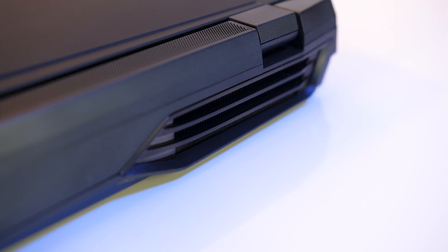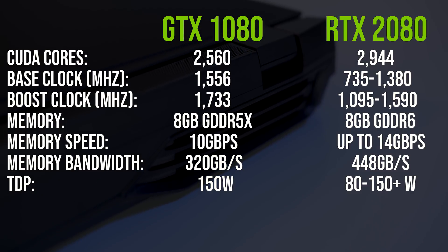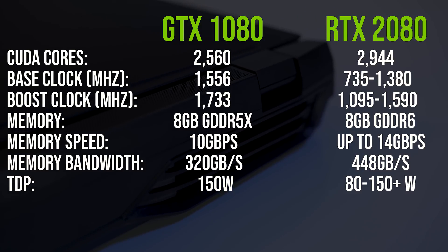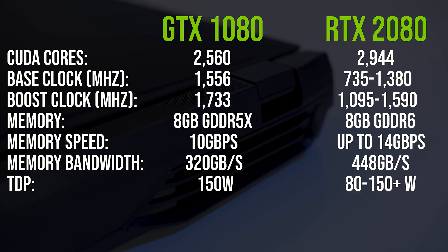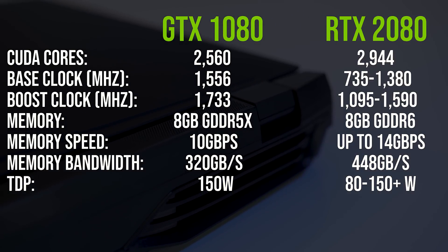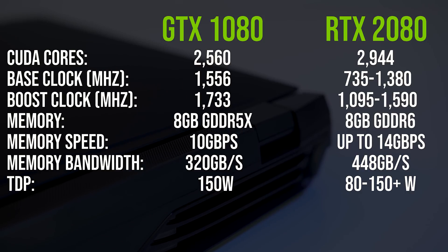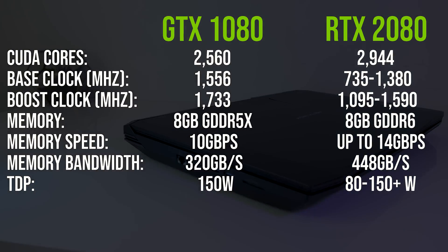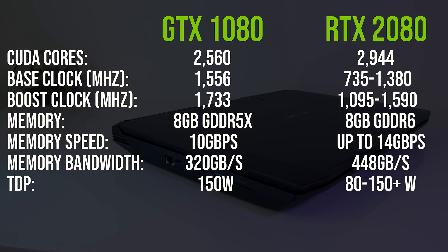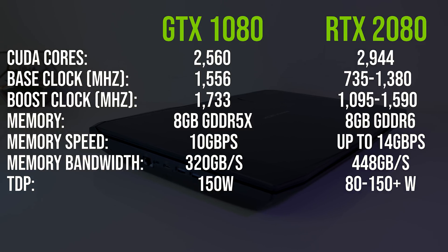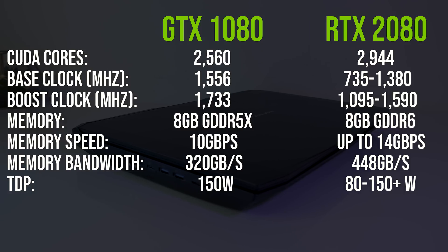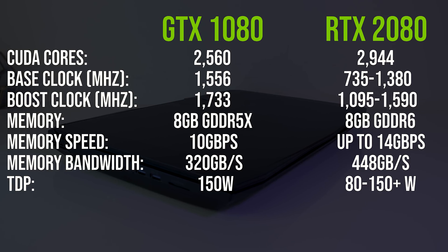Let's quickly take a look at how the laptop RTX 2080 and GTX 1080 differ in terms of specs. Note that things like clock speed and power will vary between specific cards and laptops. The 2080 has more CUDA cores, however according to Nvidia's specs the base and boost clock speed ranges for laptops with RTX 20 graphics is lower than the 1080. Both also have 8GB of memory, although the 2080 has faster GDDR6.